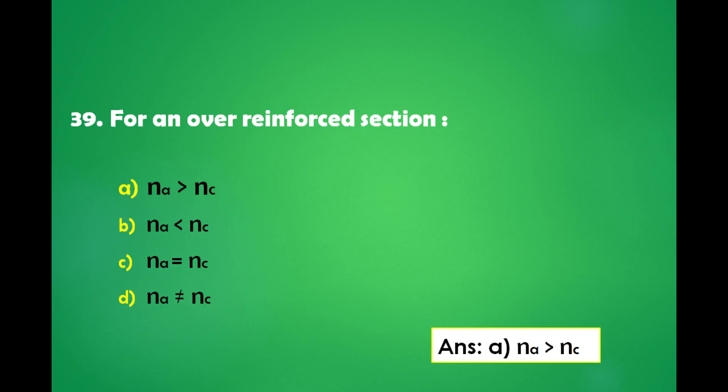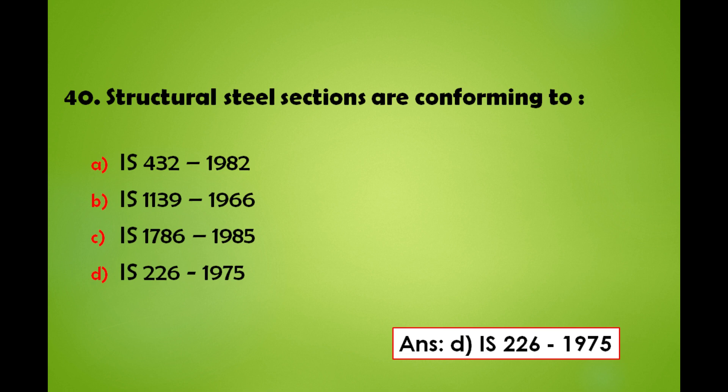For an over-reinforced section: a) Na > Nc, b) Na < Nc, c) Na = Nc, d) Na ≠ Nc. The answer is: for an over-reinforced section, Na is greater than Nc.